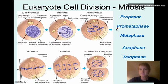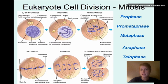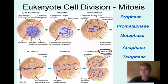The next phase is telophase. In telophase, the chromosomes have moved to either pole and you can see the cell starting to divide. Then comes cytokinesis — the actual cell division. Cytokinesis occurs after telophase and is not technically considered part of mitosis, but it is the final step where the cell has actually divided into two.